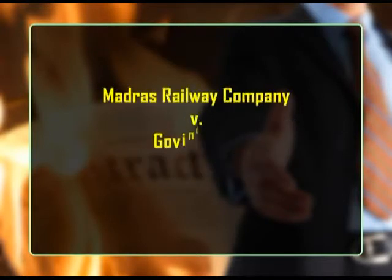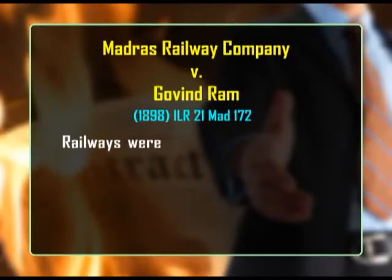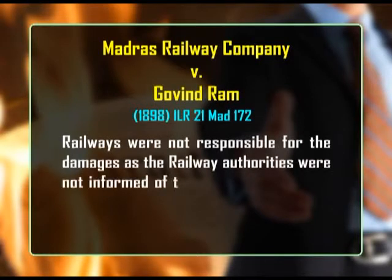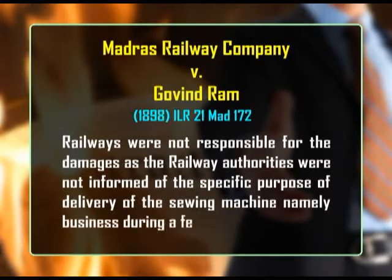In Madras Railway Company v. Govind Ram, a tailor had given his sewing machine to the railways to be delivered at a station as a consignment. He did not mention that any delay in delivering the sewing machine would result in damages for his business, as he had planned to do good business at a place where a festival was to be held. The sewing machine was delivered after the festival was over. It was held that the railways were not responsible for the damages, as the railway authorities were not informed of the specific purpose of delivery of the sewing machine — namely, business during a festival.